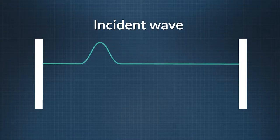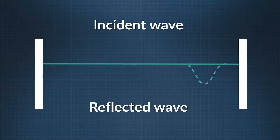So pluck the string, and the first position of the string we see is the incident wave. That's the solid line. The wave opposite is the dotted line, and that's the reflected wave.